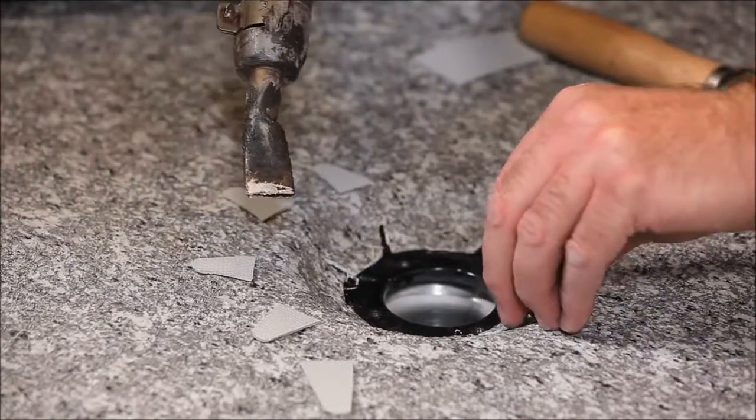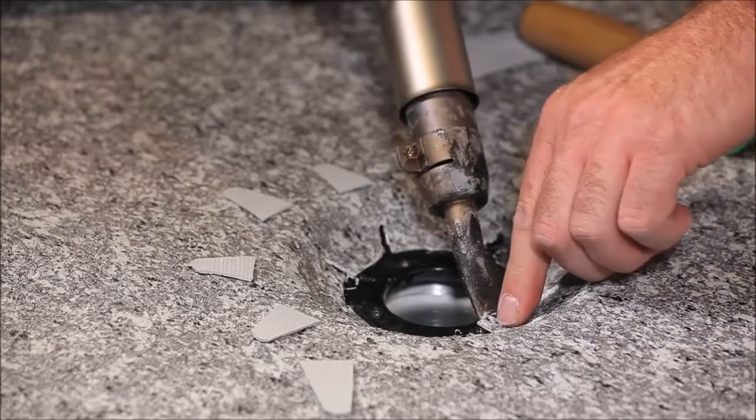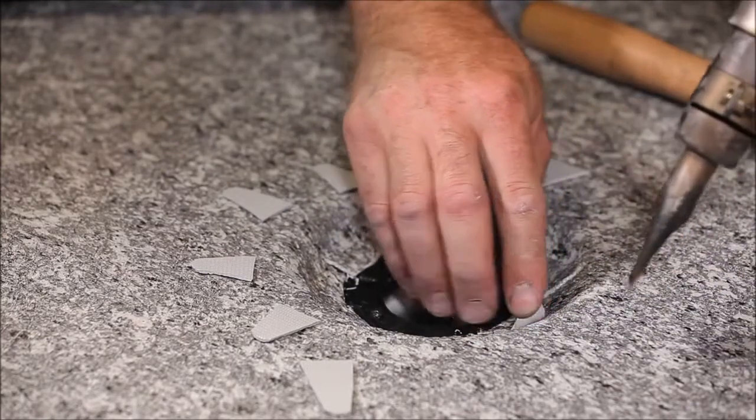Next, go back and weld small patches over the remaining gaps in the drain inlet to ensure the vinyl is properly sealed below the level of the clamping ring.